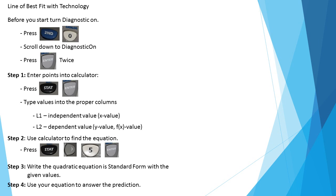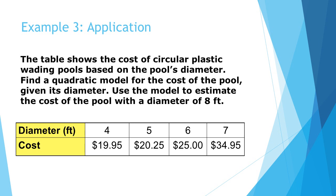Those are the steps you will use in class. The table shows the cost of circular plastic wading pools based on the pool's diameter. We're going to find a quadratic model for the cost of the pool given its diameter and use the model to estimate the cost of a pool with a diameter of eight feet. Your independent variable values are four, five, six, and seven. Your cost depends on the diameter, so those are your dependent values.